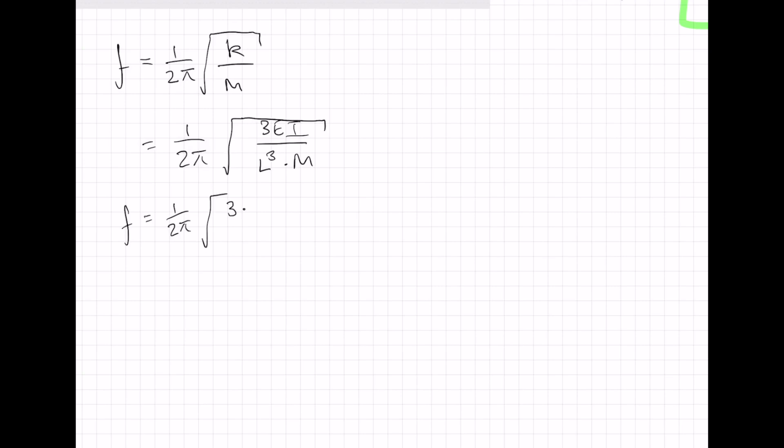3, 70 times 10 to the 6 over 5 cubed times 1,000 kilograms. 3, so 210 times 10 to the 6 divided by 5 cubed divided by 1,000. And square root of that is 40.99 radians per second.